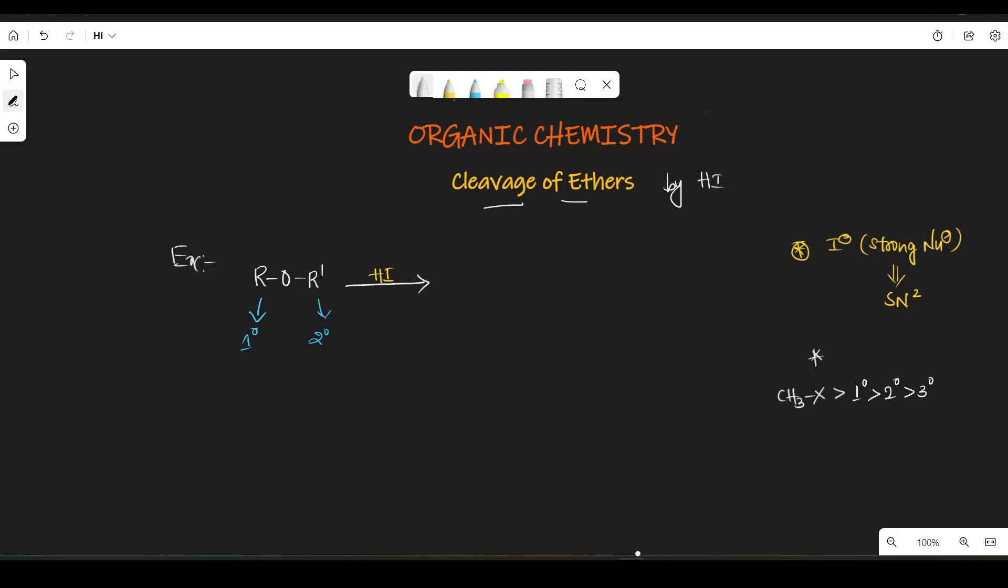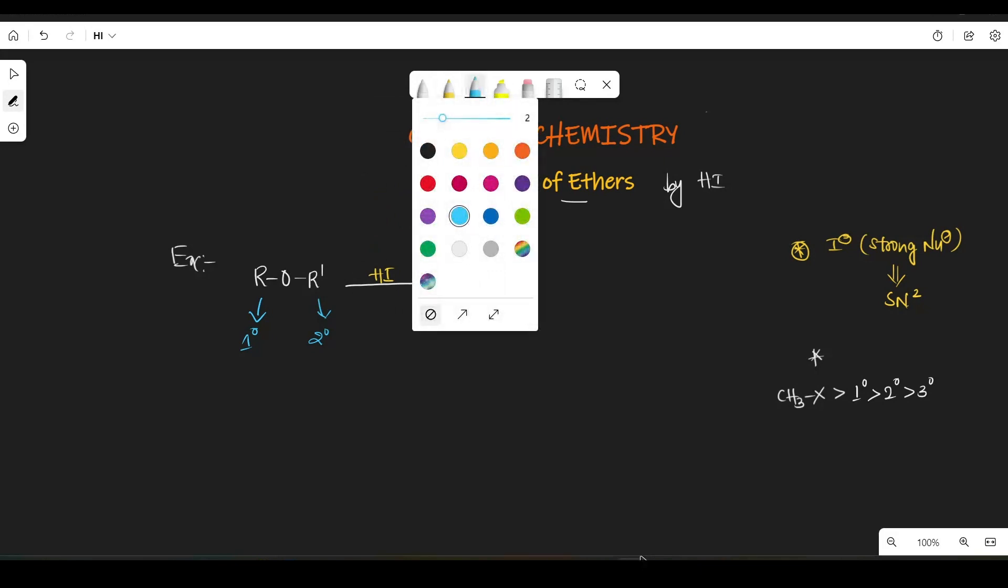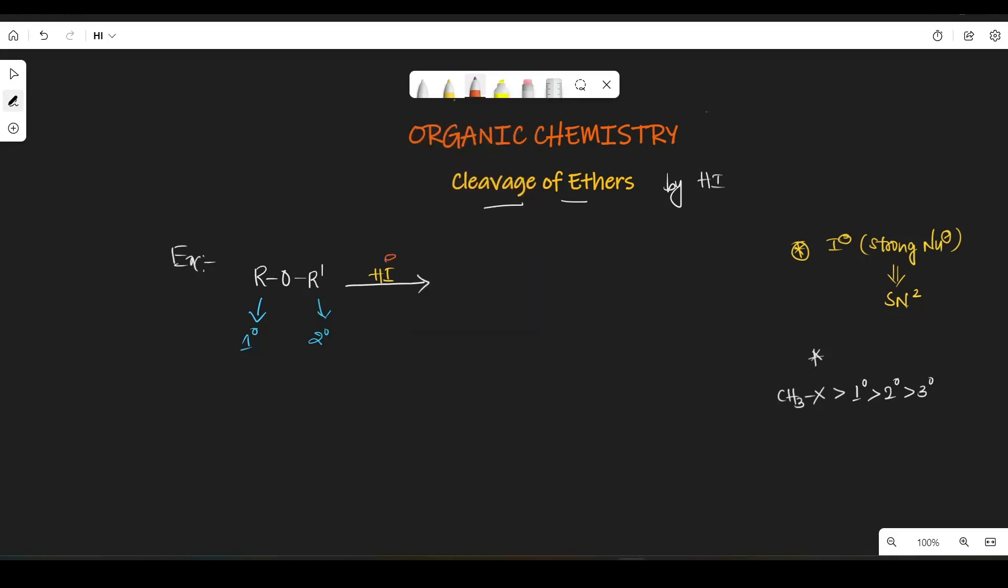So now we just assume that this is primary and secondary. So this nucleophile I- will attack. So let's take, so this I- will attack on this.